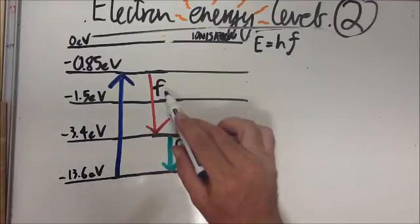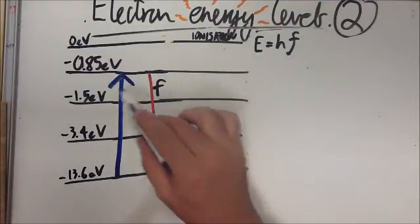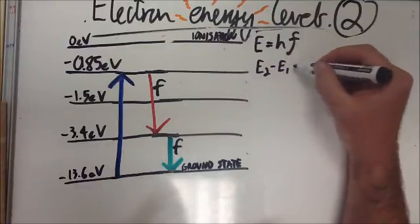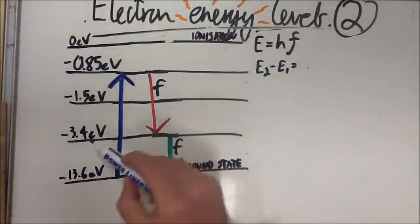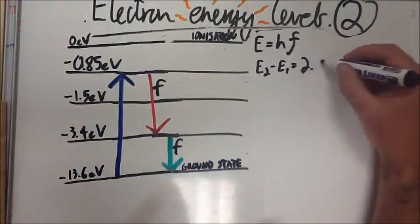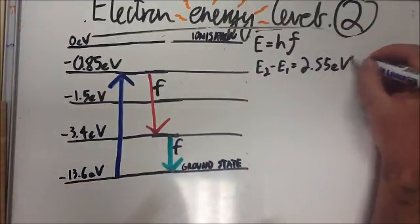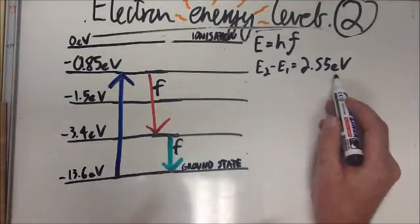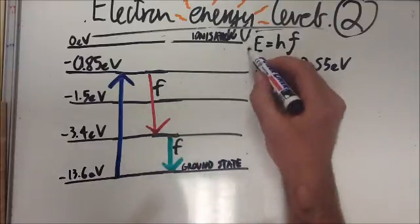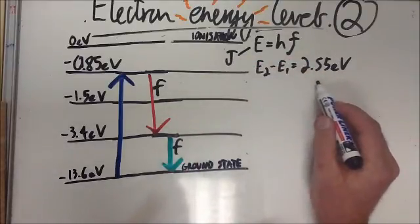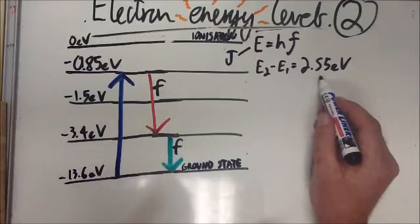So for this first one here, we know that it's dropped down an energy level, so using a little bit of simple arithmetic, the difference between these two is 2.55 electron volts. Now we can't use this in an equation, electron volts aren't much good in this equation, we know that energy is measured in joules, so we need to convert this into joules. In order to convert this into joules, we times it by the charge on an electron.